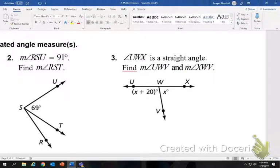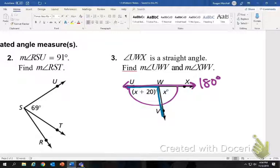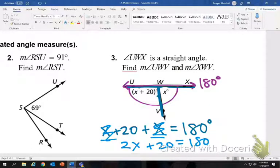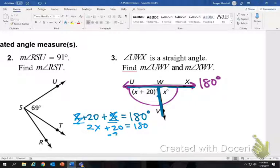Number three, it says UWX is a straight angle. That means it's 180 degrees. It says find the measure of UWV and XWV. So we know that they are the two angles that make up a straight angle, so we're going to add them up. X plus 20, which is this part of the angle, plus X, and together they form 180 degrees. So we're going to use this to find the values of X. Combine like terms, X plus X makes 2X. Drop down the 20, equals 180. We want to get X's by themselves, so we're going to subtract the 20. 2X equals 160, so X equals 80.